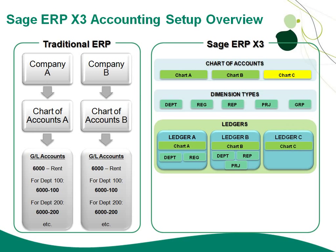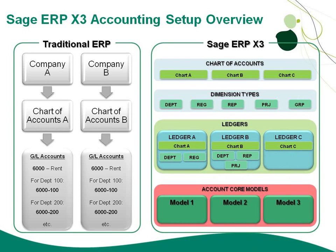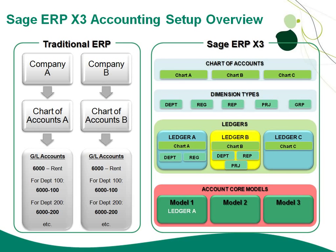After defining ledgers, the last step is to define what we call account core models in Sage GRP X3. That allows us to select the particular ledgers we want to use for our accounting structure. For model 1, I want to use ledger A — combining chart of accounts A with the department and region dimension types. For model 2, I'd use ledger B with chart of accounts B and department, sales rep, and project dimension types.